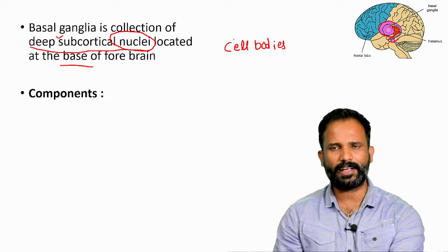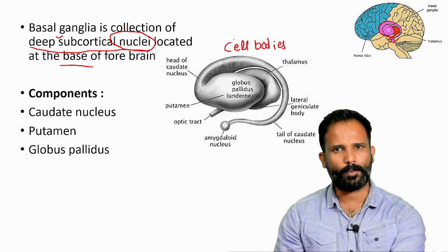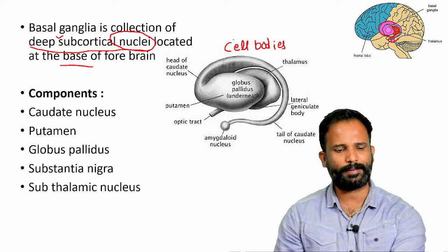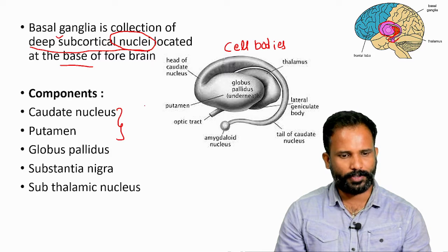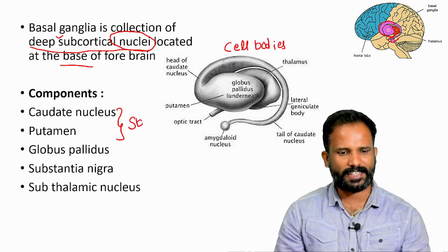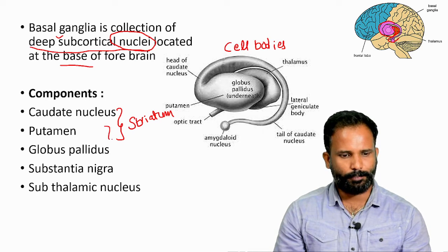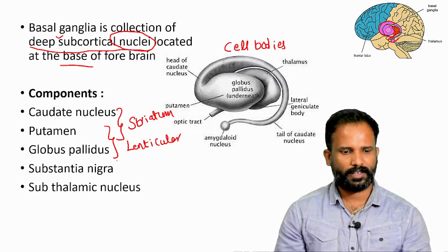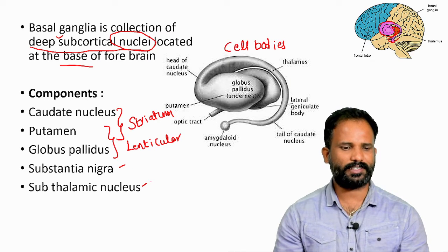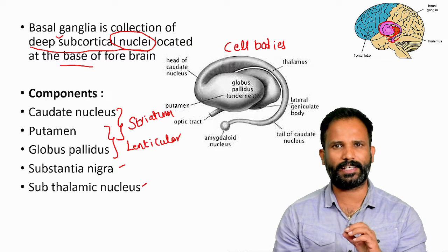Basal ganglia has five nuclei: caudate nucleus, putamen, globus pallidus, subthalamic nucleus, and substantia nigra. Caudate nucleus and putamen together are called the striatum or corpus striatum. Putamen and globus pallidus together are called the lenticular nucleus. Substantia nigra and subthalamic nucleus are the other two components.